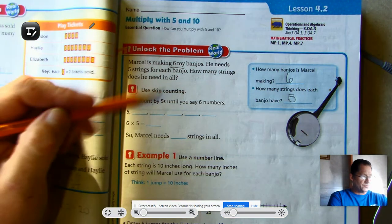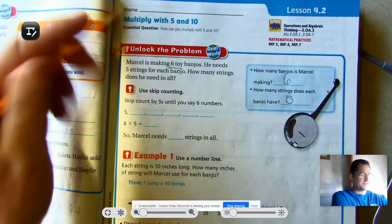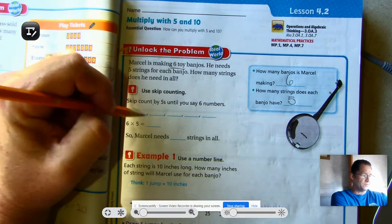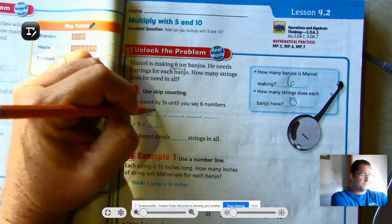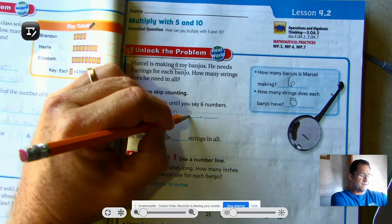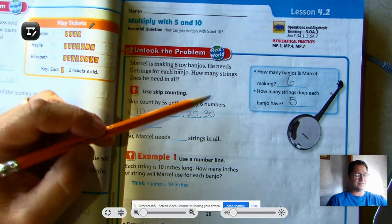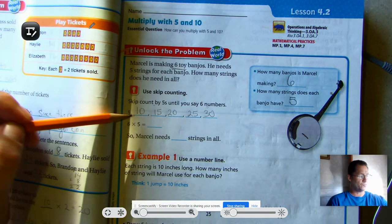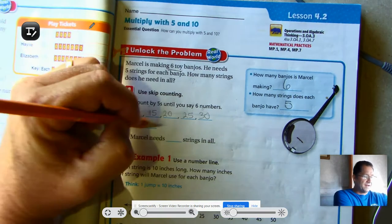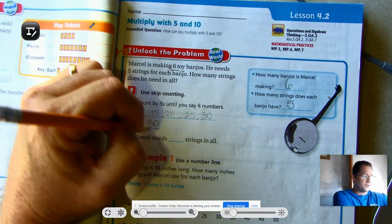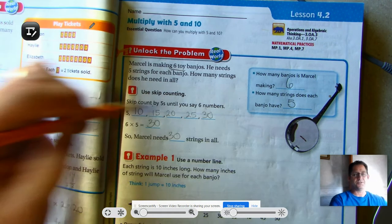So one way we can do this, multiply by five, is to just skip count by fives. So 5, 10, 15, 20, 25, 30. So we skip counted fives until we said six numbers. So six times five is 30.